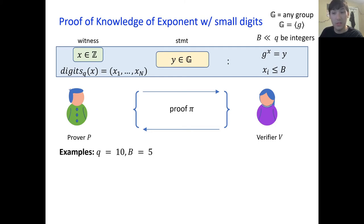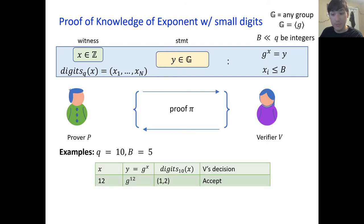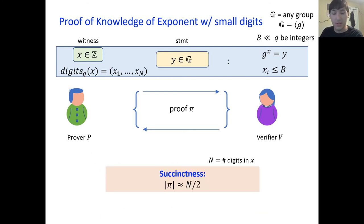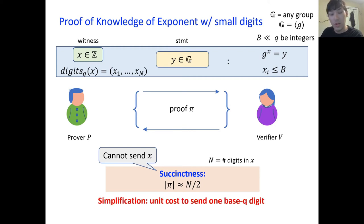Let's consider examples in base 10 with bound B equal 5. If X is 12, the verifier should accept because 1 and 2 are less than or equal to 5. The verifier should reject X equal 18 because 8 is bigger than 5, and the verifier should accept 252. For the sake of this discussion, we define succinctness as requiring the proof to be of size roughly n over 2, meaning we cannot send back the full witness. As an additional simplification, we assume unit cost to send a single base Q digit. We're going to give a divide-and-conquer protocol to solve this problem, but the protocol is buggy and is identical to what the polynomial commitment scheme of Bunz et al. does. We're going to examine the buggy protocol first, see where security breaks, and then describe our fix.